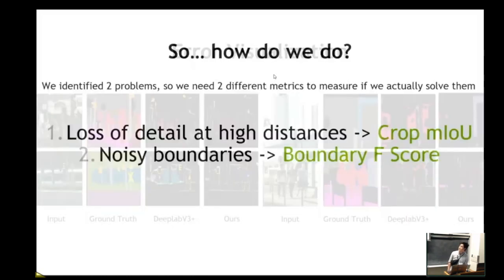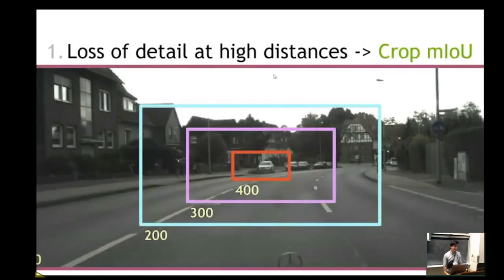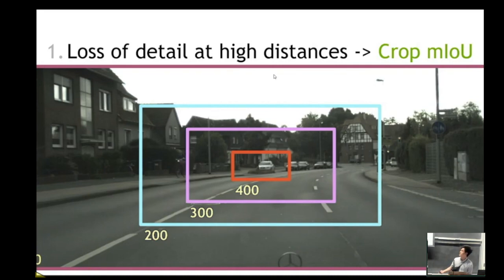So how do we actually do quantitatively? We identified two problems. So we also propose two different metrics for our two problems. So for high distances, we propose what we call a crop mean intersection over union, which is actually just intersection over union on the segmentation maps calculated at different crop distances, the higher, the farther away in the image. And this works particularly well as a metric for distance in our case, because in our outdoor scenes, typically the center of the image corresponds to farther away objects.